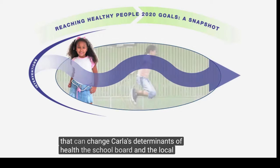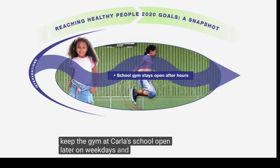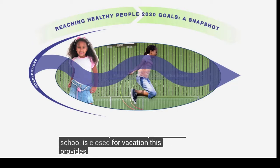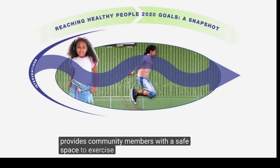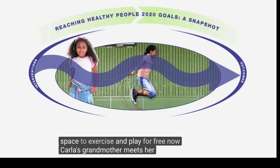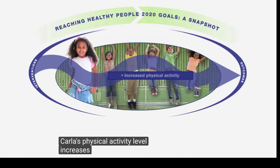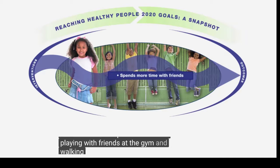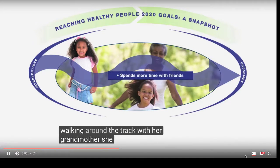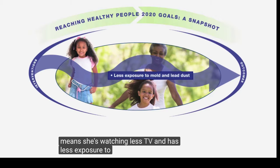The school board and the local health department work together to keep the gym at Carla's school open later on weekdays and on days when school is closed for vacation. This provides community members with a safe space to exercise and play for free. Now Carla's grandmother meets her at the gym after school. Carla's physical activity level increases as she spends more time playing with friends at the gym and walking around the track with her grandmother. She is spending her after-school hours at the gym, which means she's watching less TV and has less exposure to mold and lead dust.